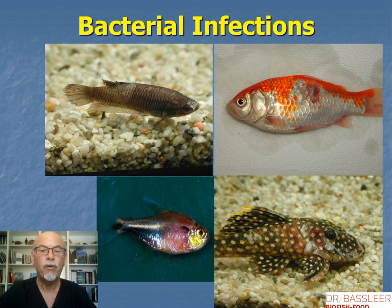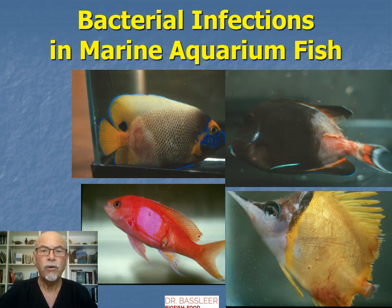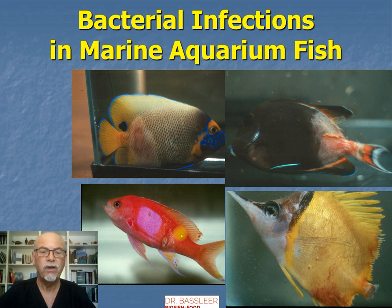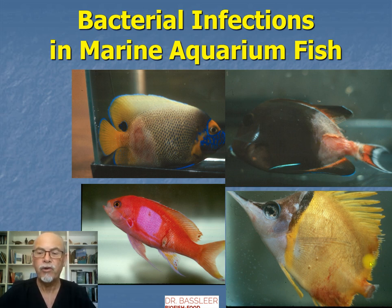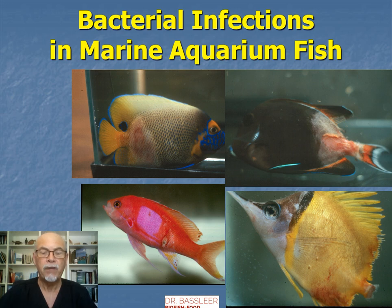Here below, an L18 bristlenose pleco with a bacterial infection — red wounds, white patches. And here the black neon tetra with a red wound, also caused by bacterial infection. Here on the marine aquarium fish, also these kinds of red wounds on this Navarchus angelfish. Or here below the Anthias, with a red ulcer caused by Vibrio. Here Acanthurus achilles, with white necrotic dissolvement of the body, of the skin — necrotic tissue caused by the columnaris bacteria. And here below the Longirostris with very heavy fin rot, tail rot and red wounds, all caused by bacterial infections.